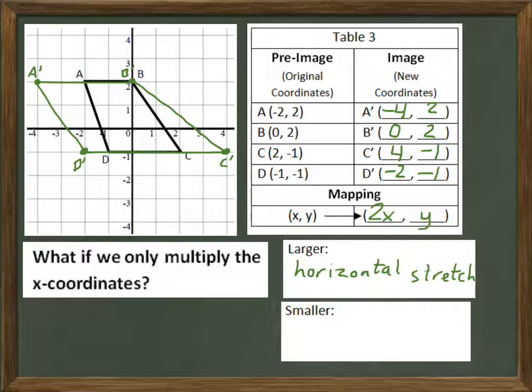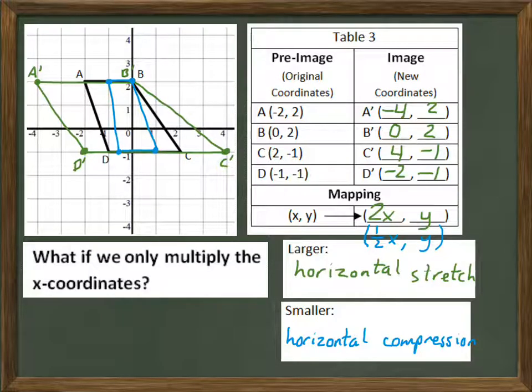So if we make it smaller, in the x-direction only, we're going to call that a horizontal compression. So a mapping rule for that would look like multiplying all the x's by one-half, which is the same as dividing by two, and still keeping the y's the same. That looks like the blue figure on the picture. We've taken all the x-coordinates and divided them by two. So it looks like it's been squished in the horizontal direction, rather than stretched.